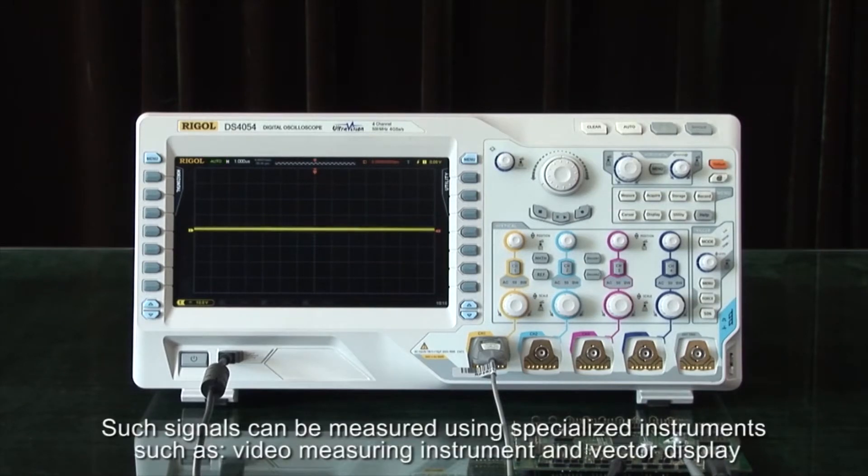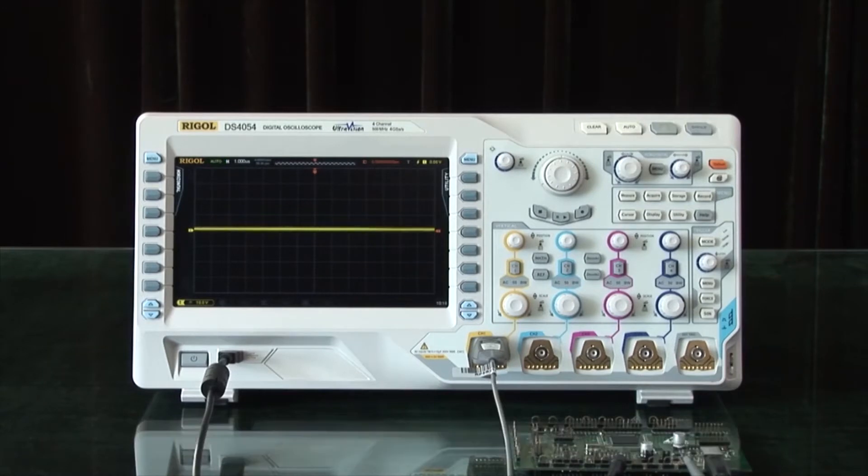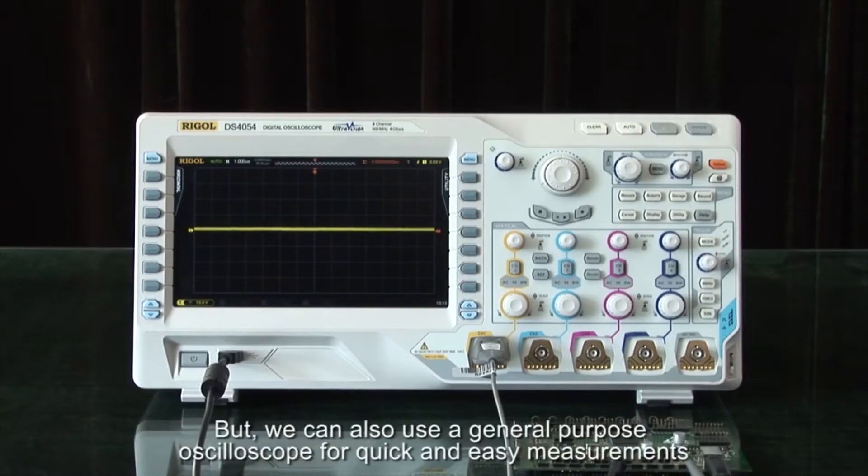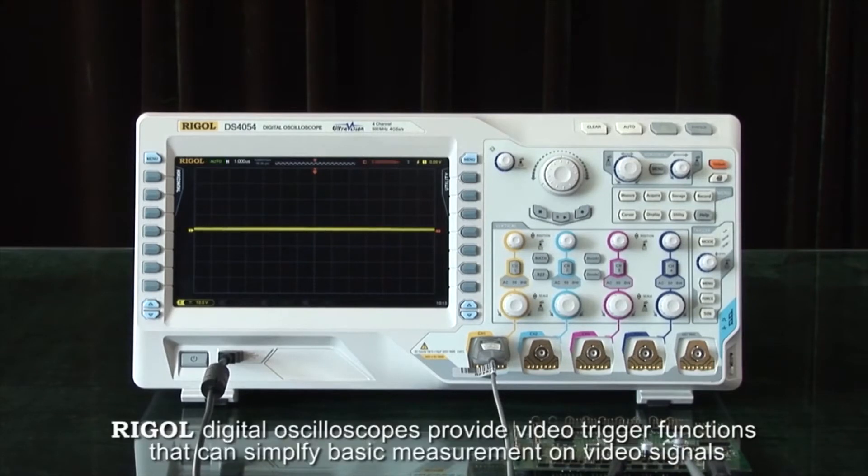Such signals can be measured using specialized instruments such as video measuring instruments or vector displays, but we can also use a general purpose oscilloscope for quick and easy measurements. Regal digital oscilloscopes provide trigger functions that can simplify basic measurements on video signals.